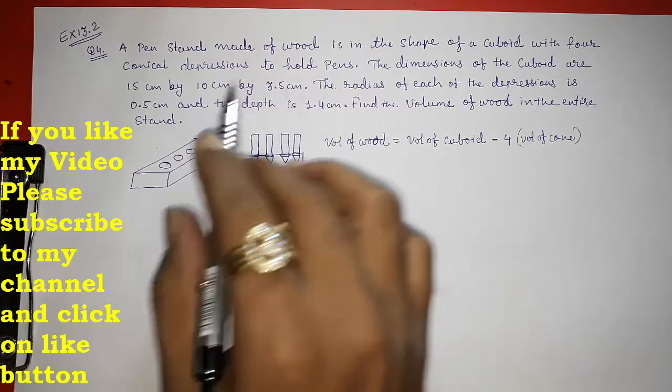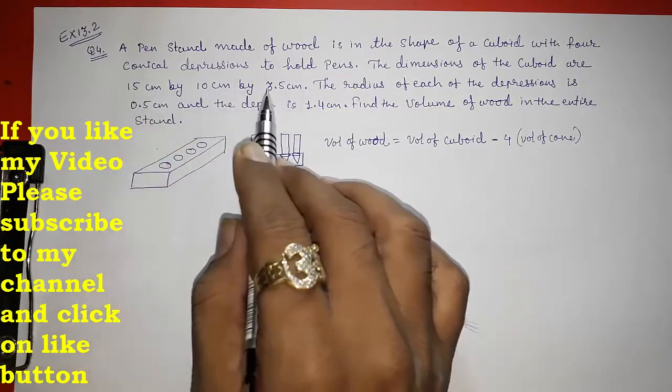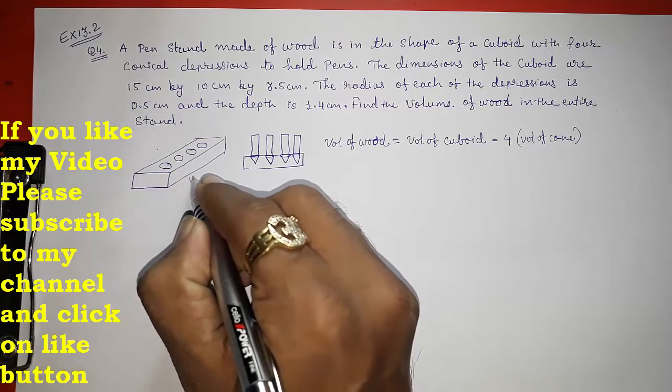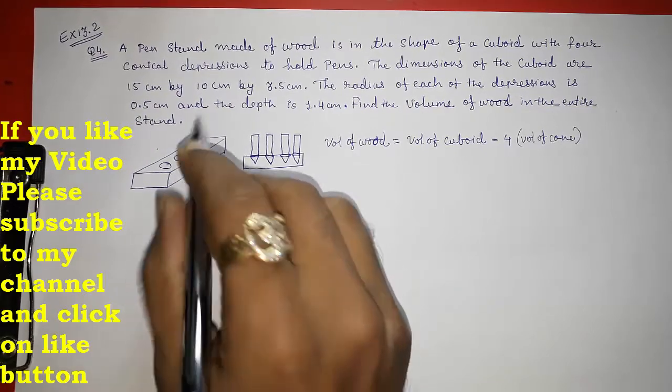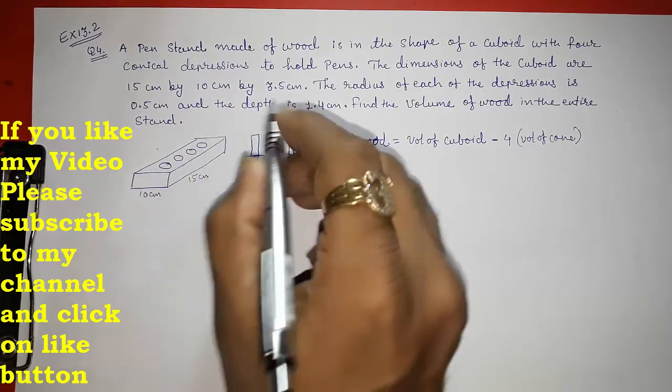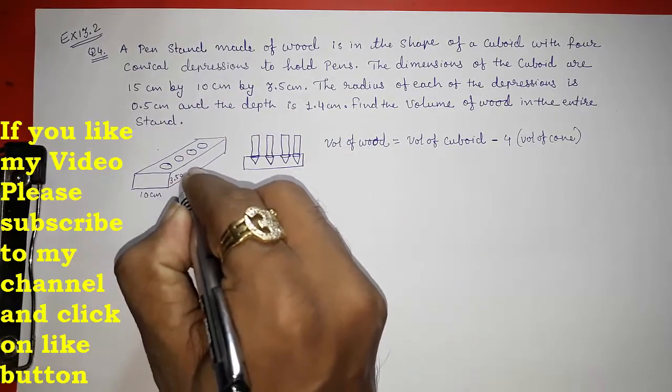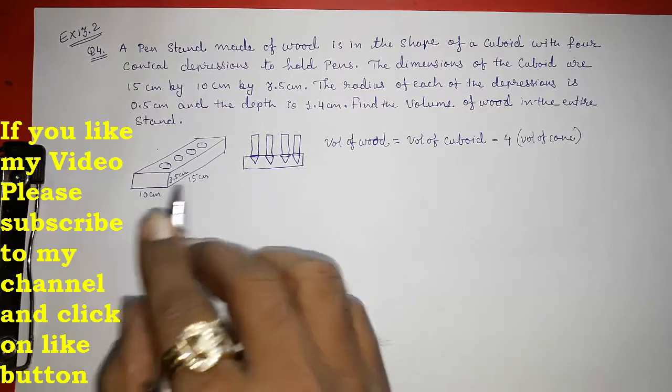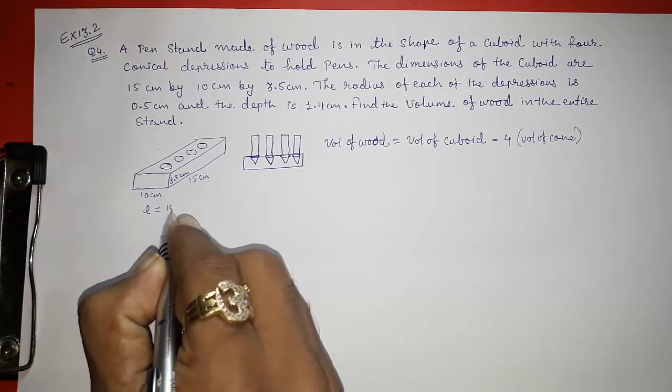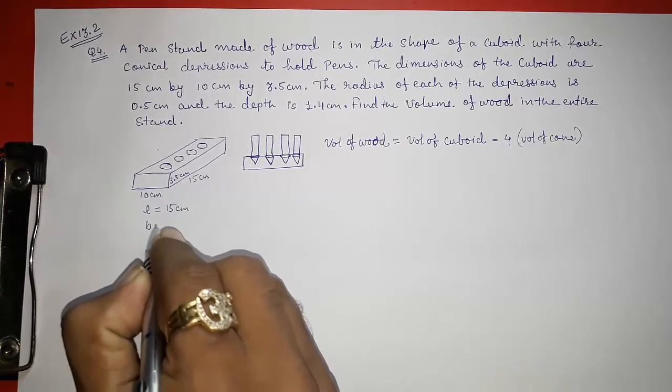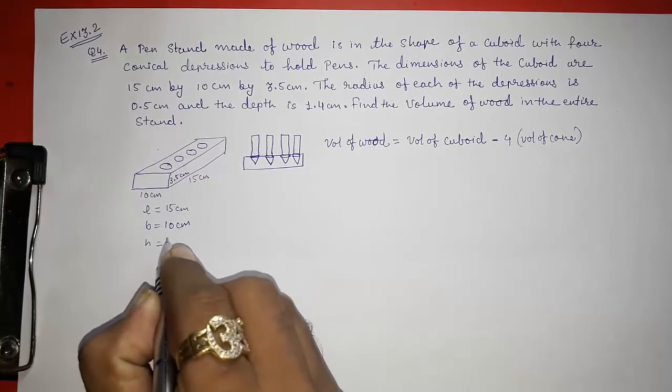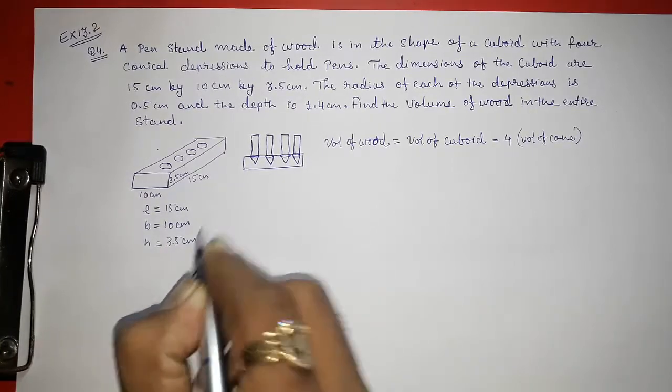Now, they had given us length, breadth and height. Look here, the length will be 15 cm, breadth is 10 cm and the height is 3.5 cm. We are having length, breadth and height. You can make the list if you want to: length 15 cm, breadth 10 cm and height 3.5 cm.